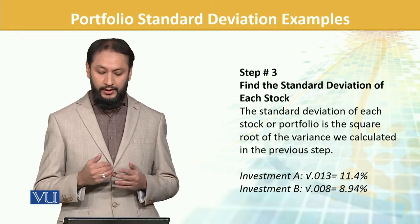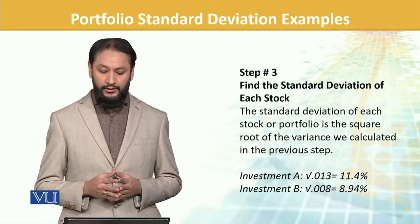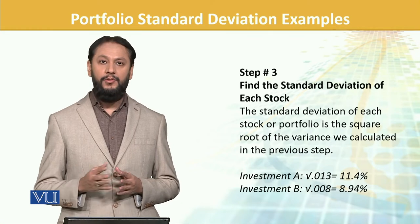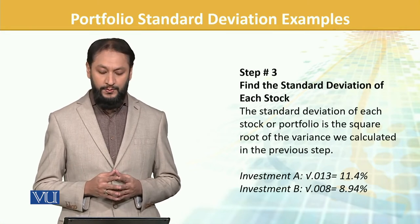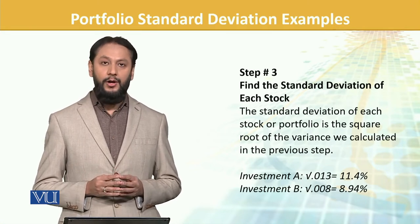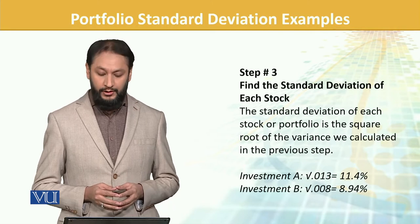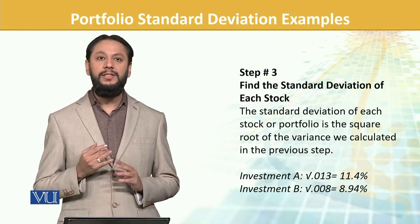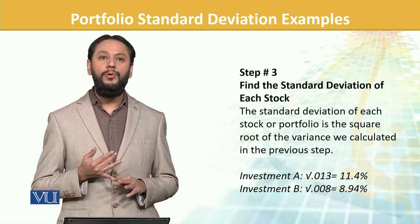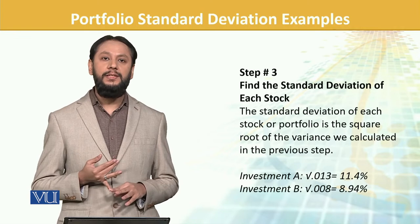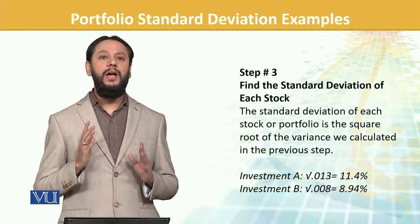The variance was 0.13, and from that we get 11.4 for Investment A and 8.94 for Investment B. So now we have the standard deviations of both asset classes.